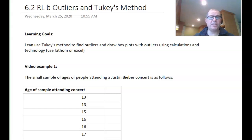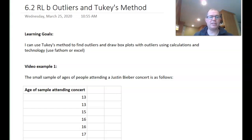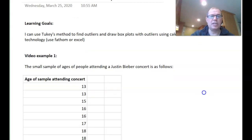My name is Graham Lewis and in this short video we're going to look at outliers and use a method called Tukey's method to find and locate these outliers. Let's have a look at a simple example with a small sample of ages of people attending a Justin Bieber concert.